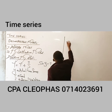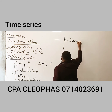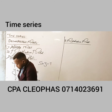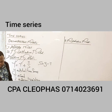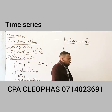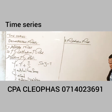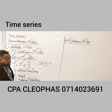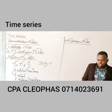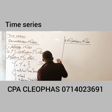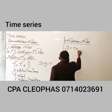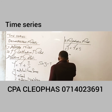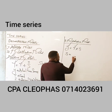Number two is the multiplicative model. This is a decomposition model used where the components of time series are dependent on one another. The formula is Y = T × S. If you have Y and T, to get S using the multiplicative model: S = Y ÷ T.